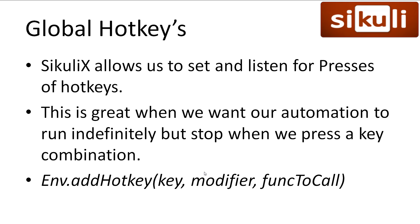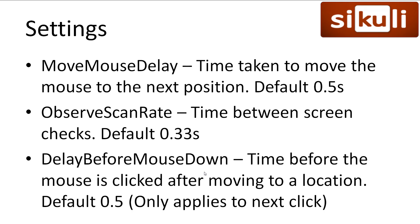First we have global hotkeys. We can listen for a certain hotkey press to change what our script is doing, or stop our automation if it's running indefinitely. Skooliex also provides us with a large number of settings to modify its behaviour. The main setting you may want to use is Move Mouse Delay, which is the time taken to move from the current mouse position to the next. By default this is half a second, or 0.5. Observe Scan Rate is the amount of time between each screen scan for functions like Wait — by default it checks about 3 times a second.